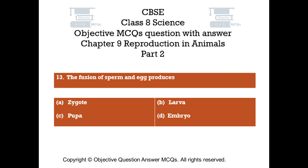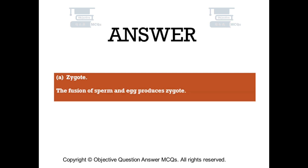Question number 13. The fusion of sperm and egg produces. Option A: Zygote. Option B: Larva. Option C: Pupa. Option D: Embryo. The right answer is Option A: Zygote. The fusion of sperm and egg produces a zygote.